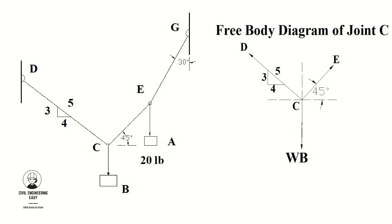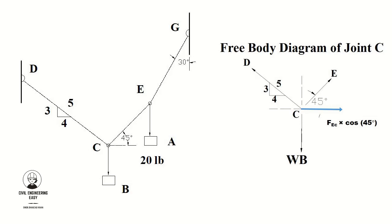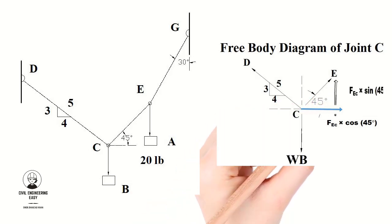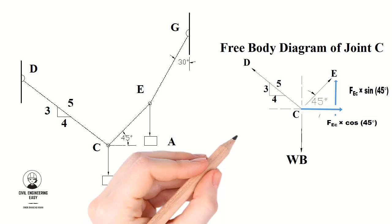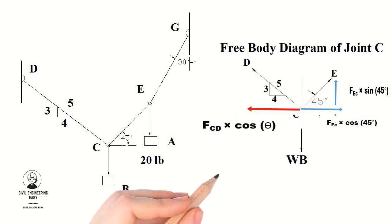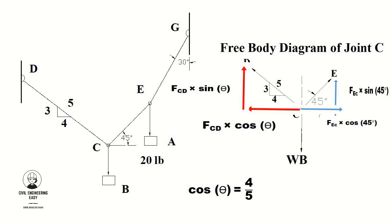Resolve the forces at joint C into horizontal and vertical components. For FEC: horizontal component = FEC × cos(45°) and vertical component = FEC × sin(45°). For FCD: horizontal component = FCD × cos(θ) and vertical component = FCD × sin(θ), where cos(θ) = 4/5 and sin(θ) = 3/5 based on the given 3-4-5 triangle.